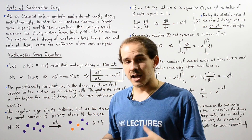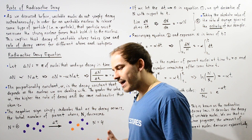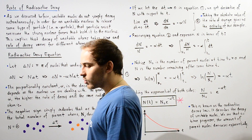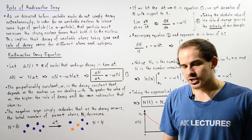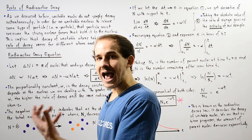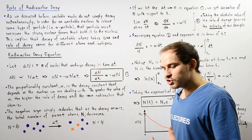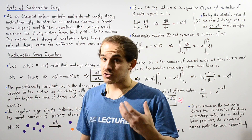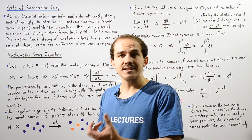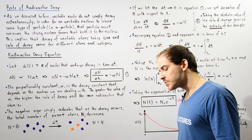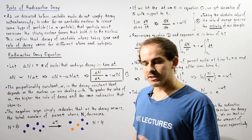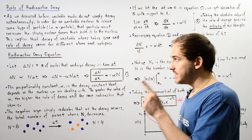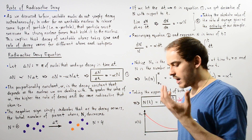In our discussion on radioactive decay and nuclei stability, we said that unstable atoms do not actually undergo radioactive decay and become more stable atoms instantaneously. In order for an unstable nucleus to release a particle — for example, in alpha decay — the alpha particle must actually overcome the attractive strong nuclear forces that hold it inside the nucleus. And this, of course, takes time. So radioactive decay does not take place instantaneously, but rather takes some amount of time, and the rate of decay varies for different atoms and different unstable isotopes.